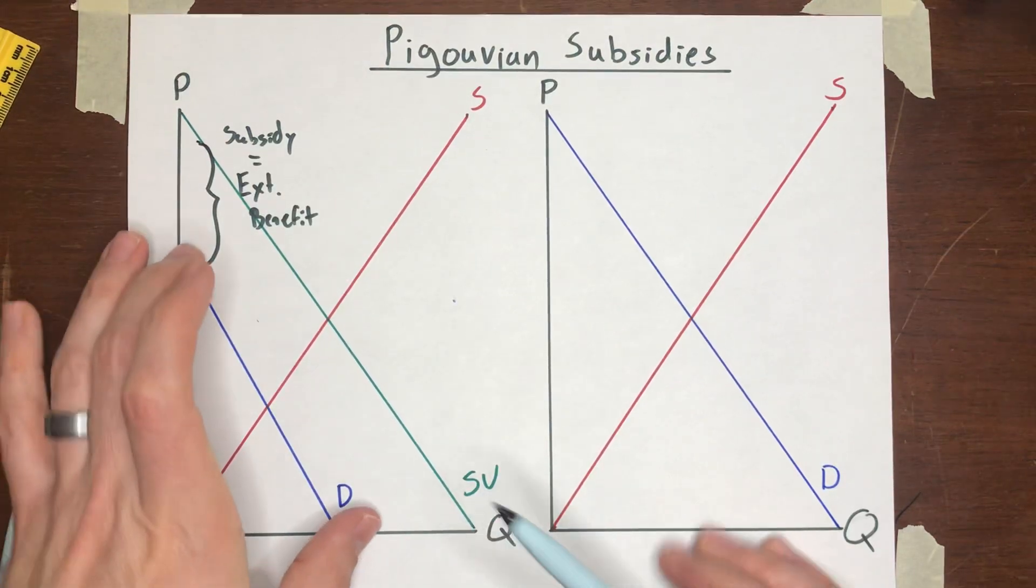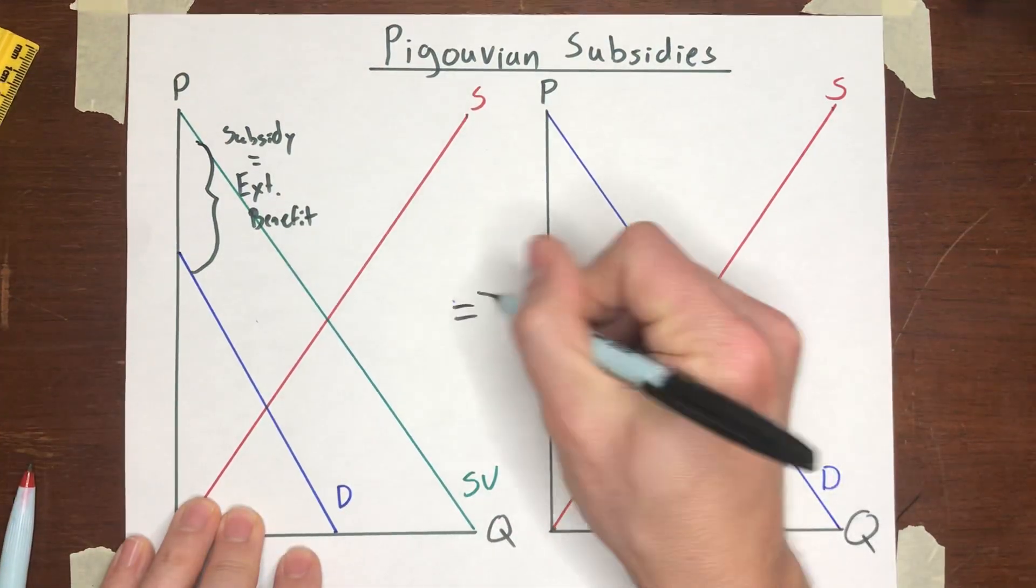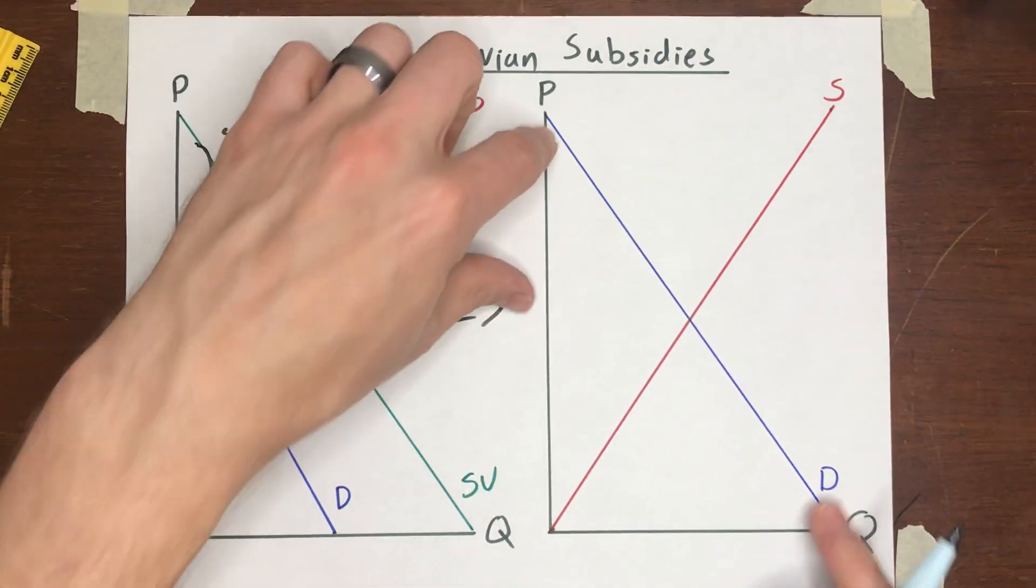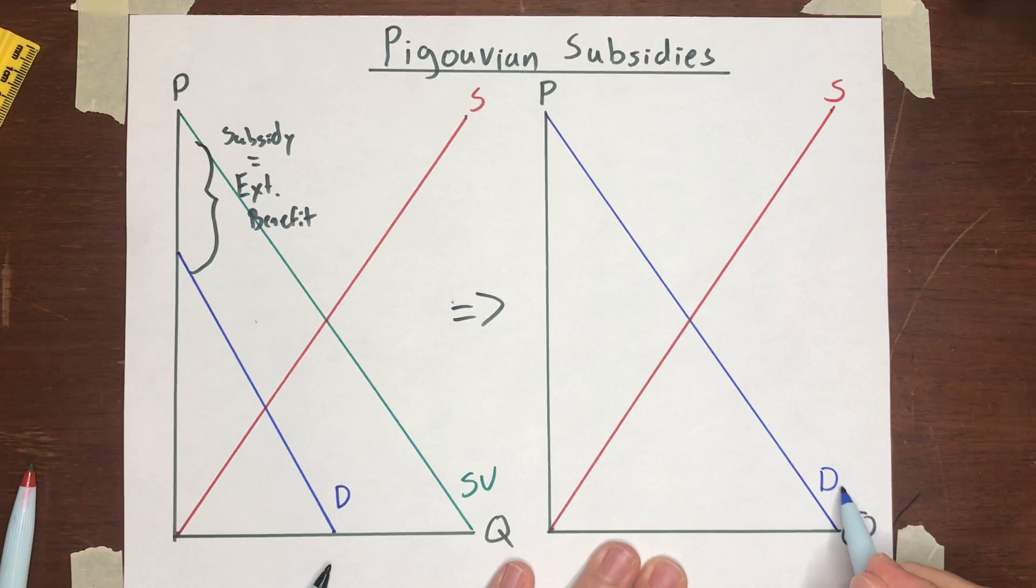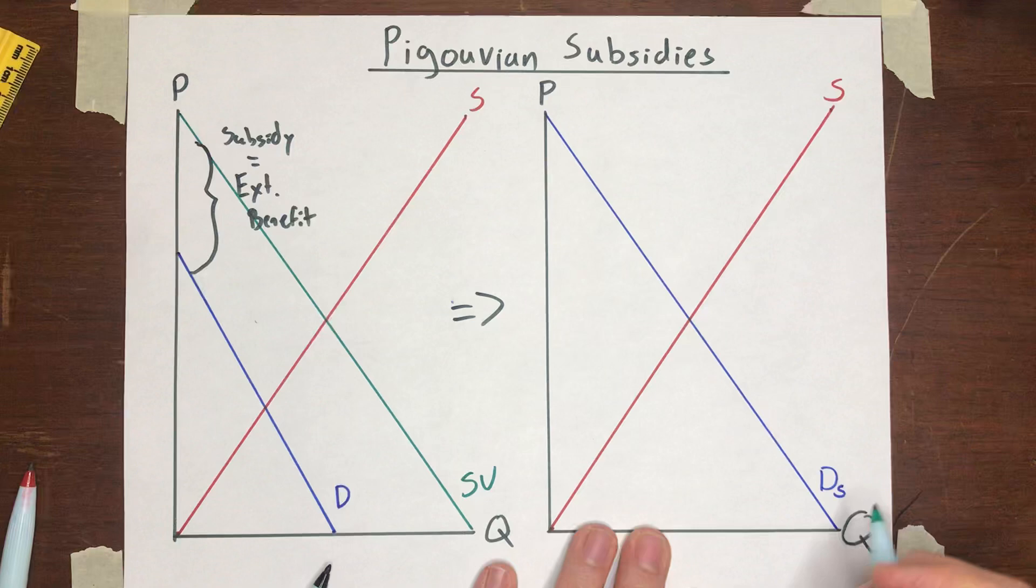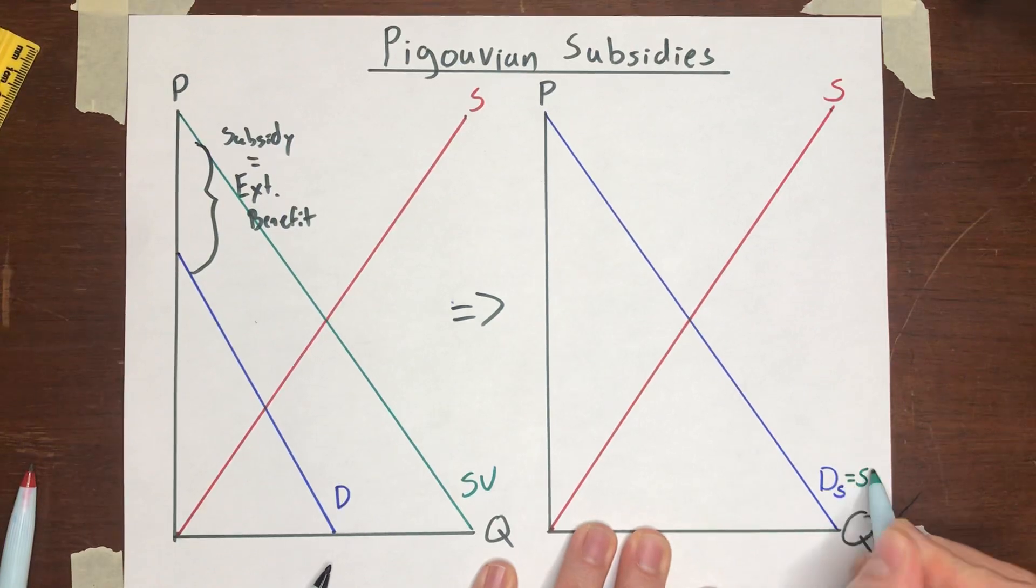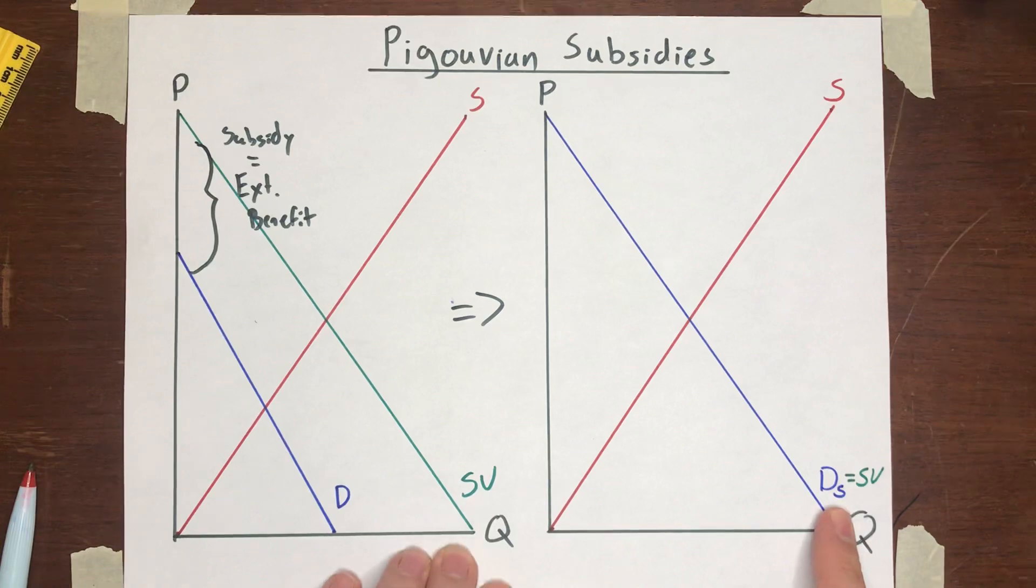And so this demand curve would shift up until it is exactly overlapping the social value curve. So the demand curve DS, the demand curve with a subsidy will be equal to the social value curve.